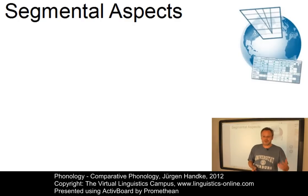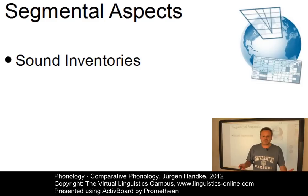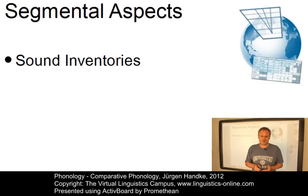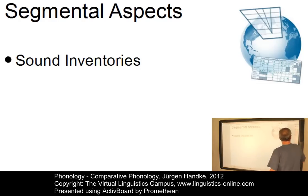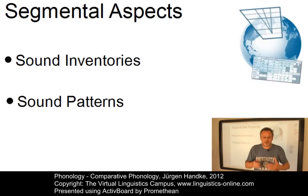Languages vary considerably with regard to their sound inventories — that is, the number and type of speech sounds they use. Some have more fricatives than others. Some seem to prefer alveolar consonants to consonants that are produced in the back of the mouth, and others only have few vowels. Or take sound patterns — the sound systems of the languages of the world seem to organize themselves into patterns, and we will look at such patterns later on.